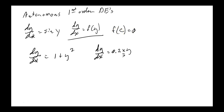A critical point is also called an equilibrium point or stationary point. In the example we looked at — dy/dx equals sine y — the equilibrium points were when y equals 0, y equals π, y equals 2π, any multiple of π. Those were all critical points, the places where the function equals 0. A constant solution y(x) equals c is called an equilibrium solution.